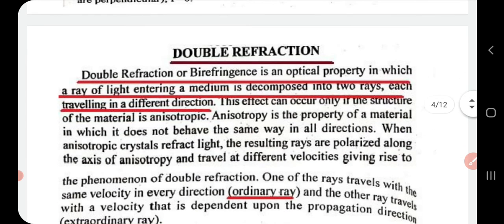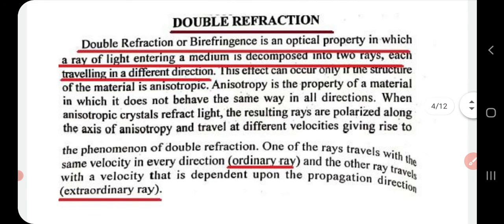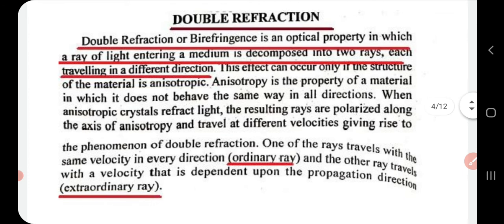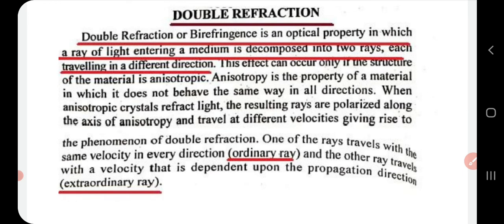Double refraction — also called birefringence — is an optical property in which a ray of light entering a medium is decomposed into two rays, each traveling in different directions. Those two rays are named the ordinary ray (o-ray) and the extraordinary ray (e-ray). The ordinary ray travels with the same velocity in every direction, whereas the extraordinary ray travels with a velocity depending upon the direction of propagation. The definition of double refraction is very important and is a most probable exam question.